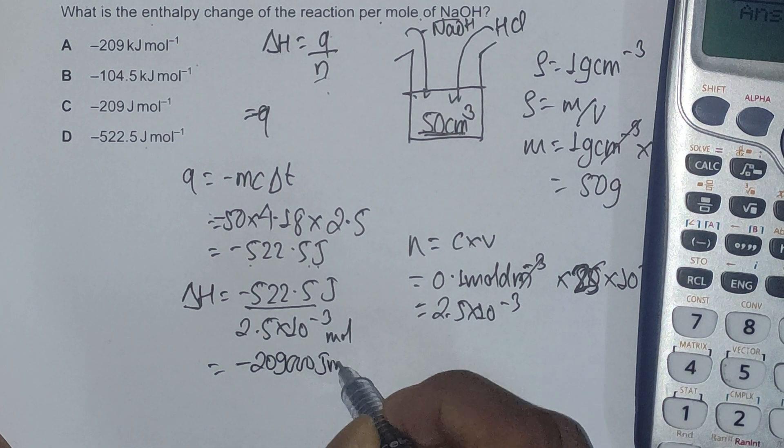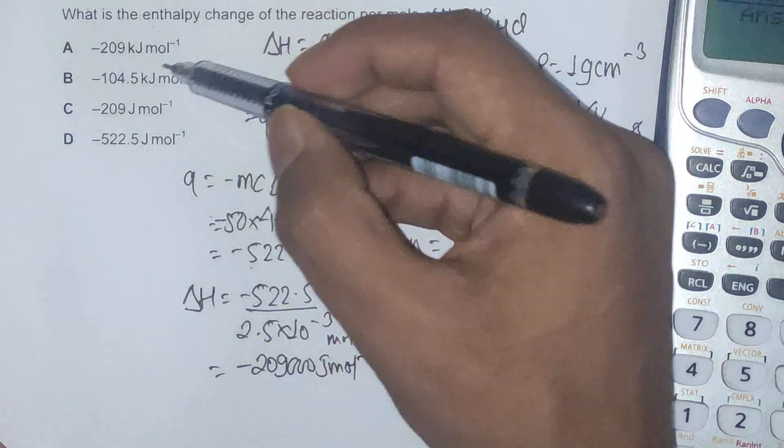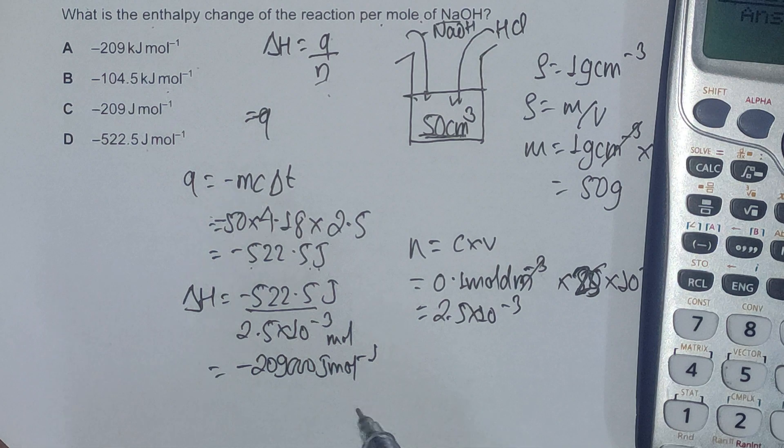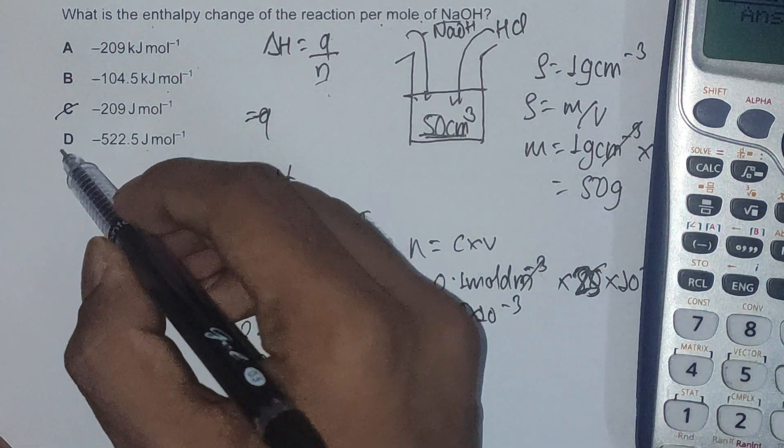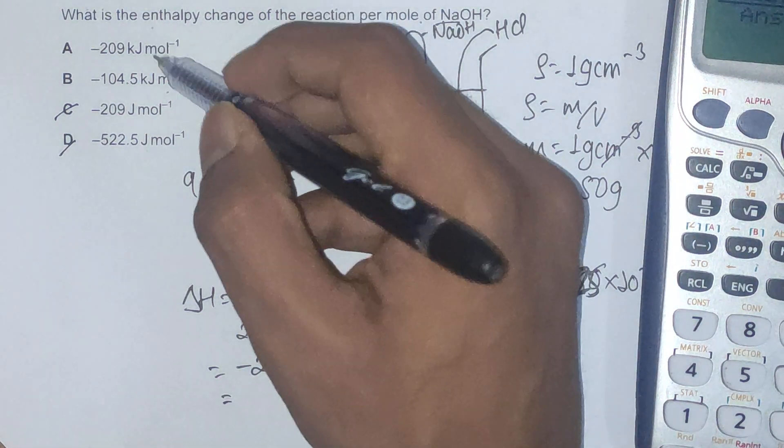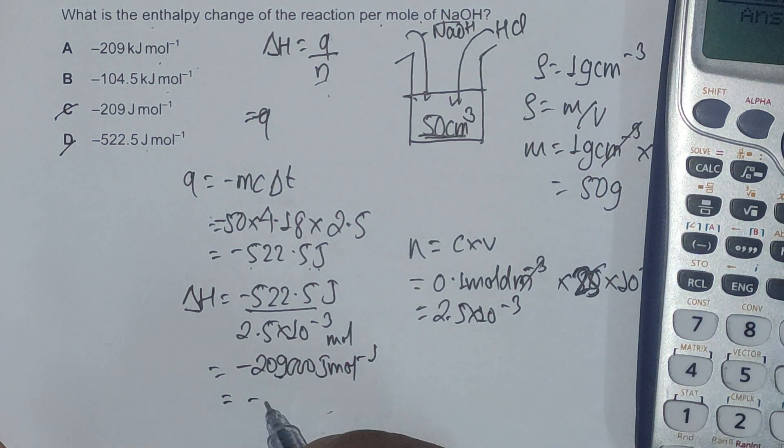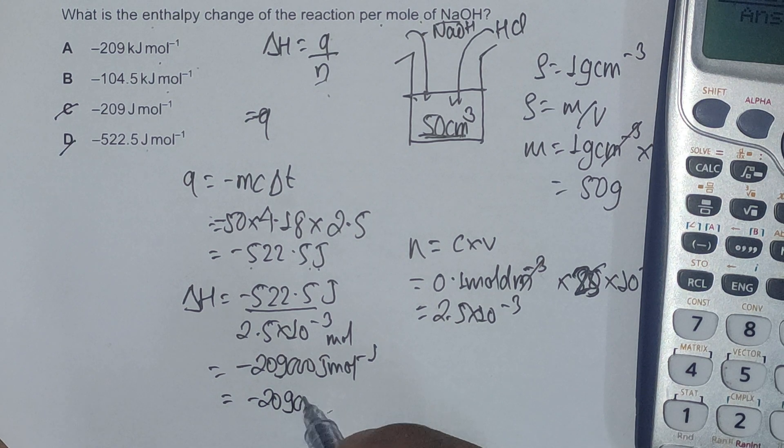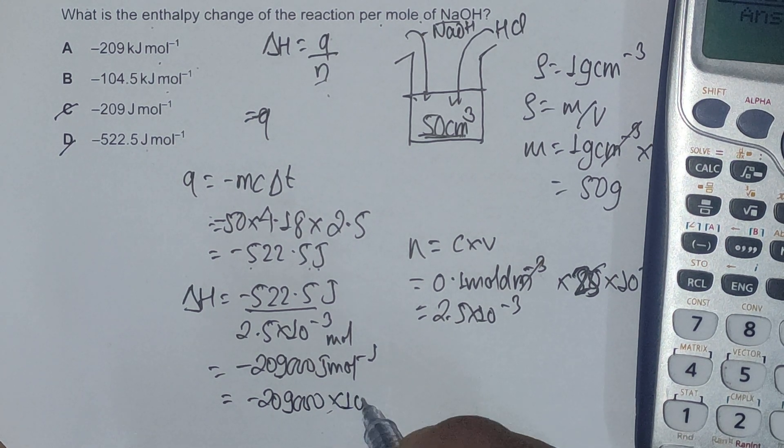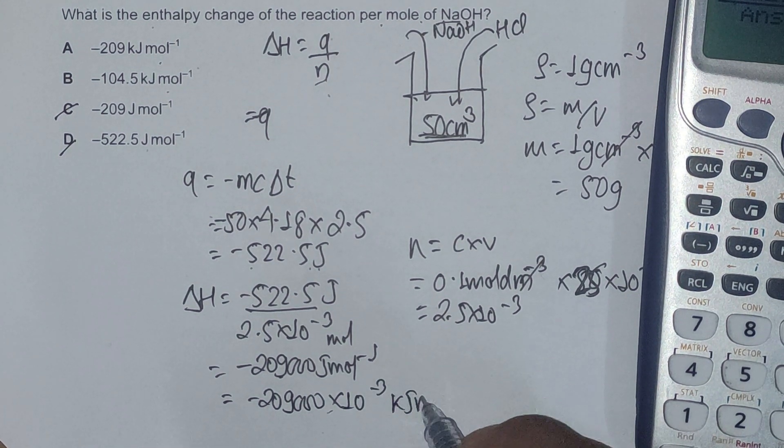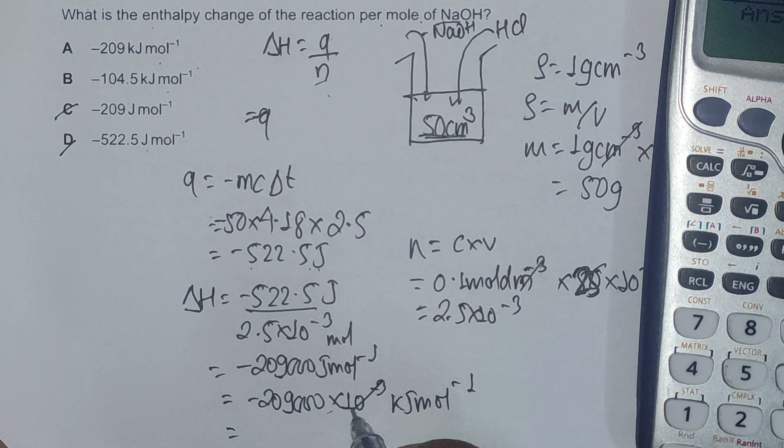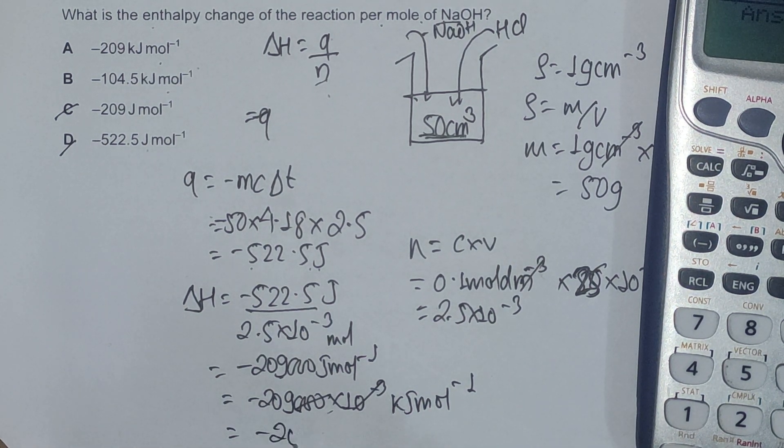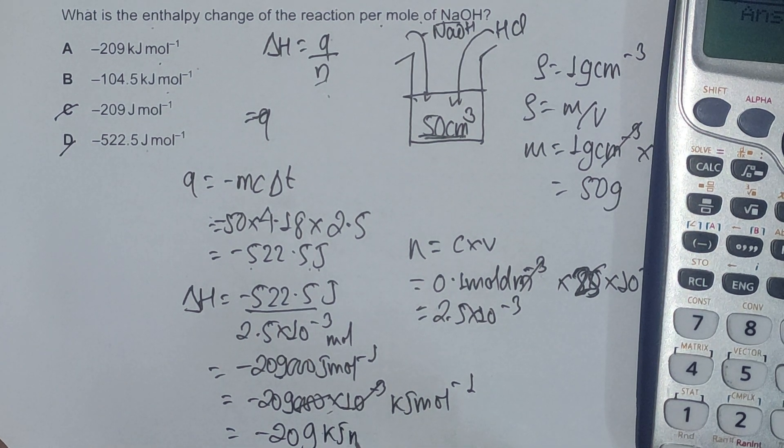Since the two option choices are in kilojoules per mole, we can cancel out the options that don't match. We'll multiply by 10 to the minus 3 to convert to kilojoules per mole. This cancels out and gives us negative 209 kilojoules per mole.